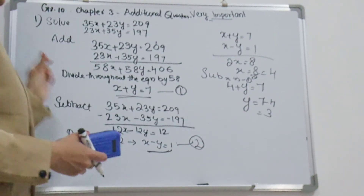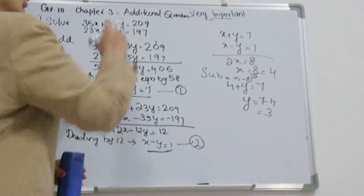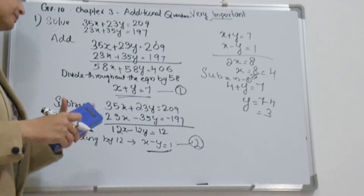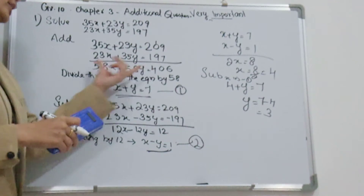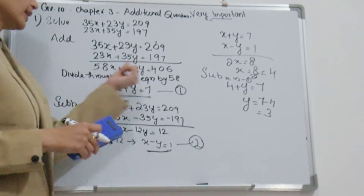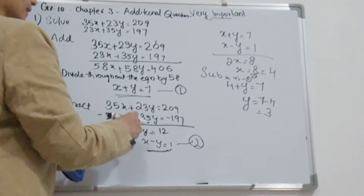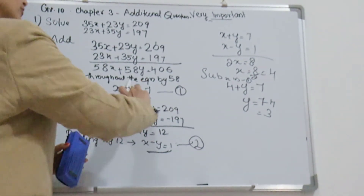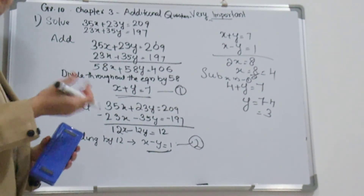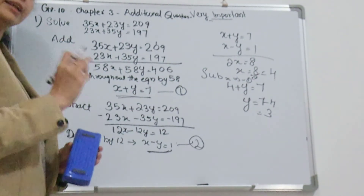The speciality of this question is that in the first equation, the coefficient of x equals the coefficient of y in the second equation, and vice versa. So you add both equations, and since x and y share a common coefficient, you can simplify easily. Then subtract the equations and simplify. Solving these two resulting equations using the linear equation elimination method gives you the answer. This is very important.